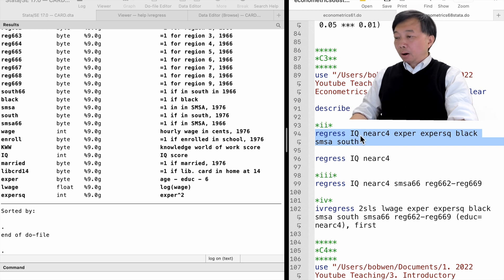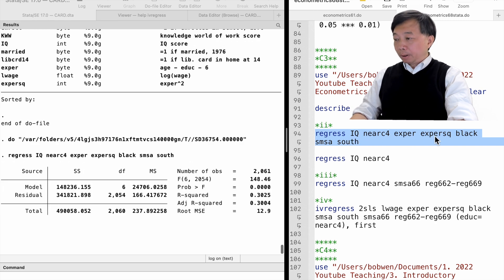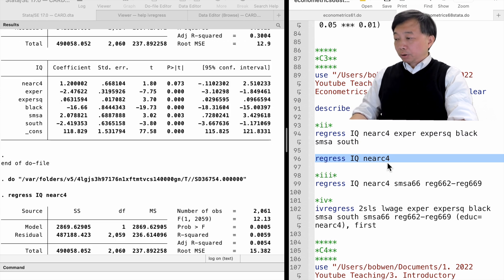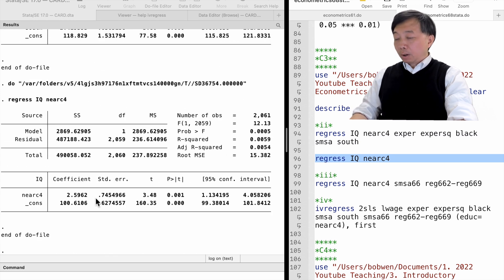We regress IQ on the instrumental variable and the other exogenous variables in the model by OLS. We find that the men who grew up near colleges are 1.2 points higher in IQ than those living far away from colleges on average. The difference is statistically significant at the 10% level but not at the 5% level. If we run the simple regression, the slope coefficient is significant at the 1% level.